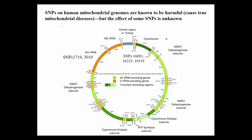SNPs on human mitochondrial genomes are sometimes known to be harmful, causing true mitochondrial disease, but we didn't see any of those in the patient population. We did see some other SNPs. This is a diagram of the mitochondrial genome, and the little numbers shown are lists of these SNPs that exist in various populations around the world. Some are known to be harmful, but others are not. The SNPs at positions 7,190, 16,519, and others in those regions turned out to be somewhat interesting with regard to ME-CFS.